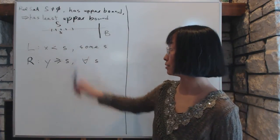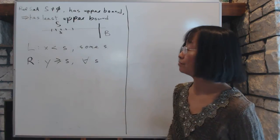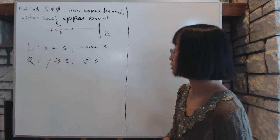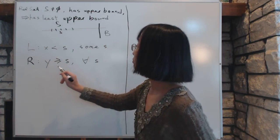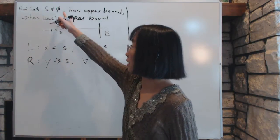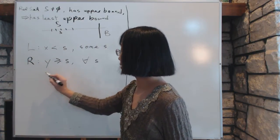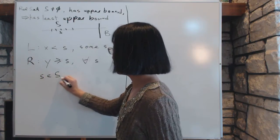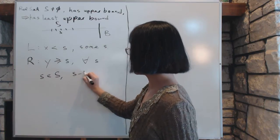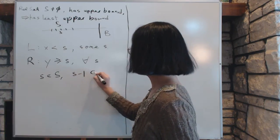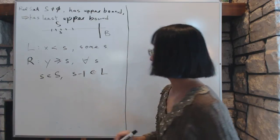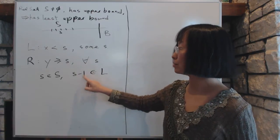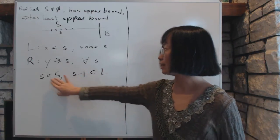A number is either less than some s or bigger than all s — there is no other choice. We have to first make sure that these two sets are not empty. Since the set S itself is not empty, there exists an s inside the set. So then s minus 1 — just pick a number a little bit smaller — will be inside L, because by definition L is any number that's less than some s.